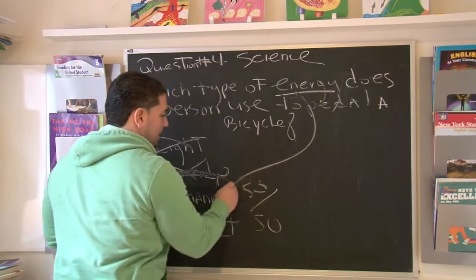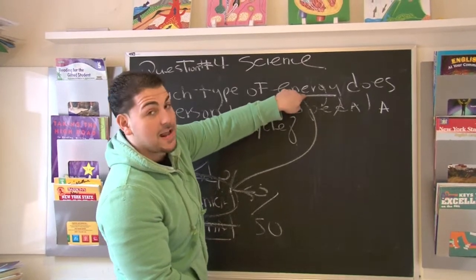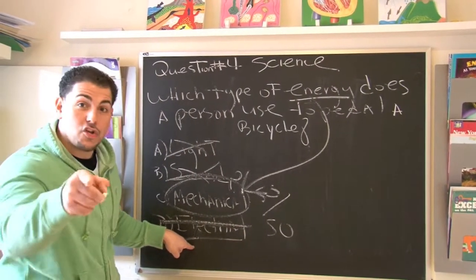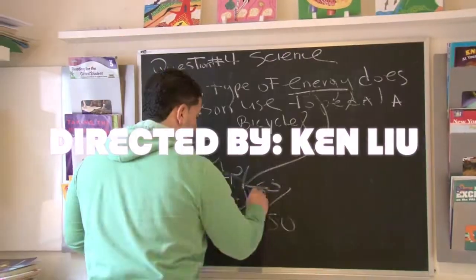And again, always look at the context clues and the key word. Key word is energy. If the bicycle is being powered by electricity, then you're not using any energy. So the answer is mechanical.